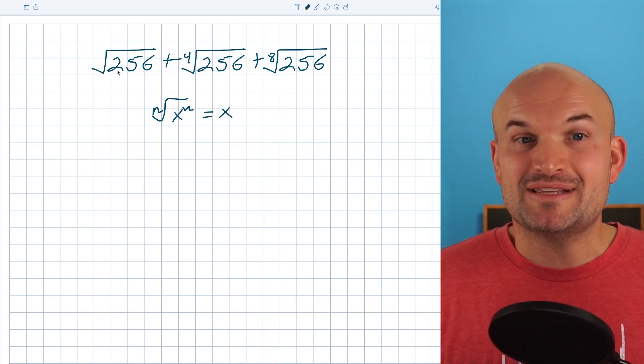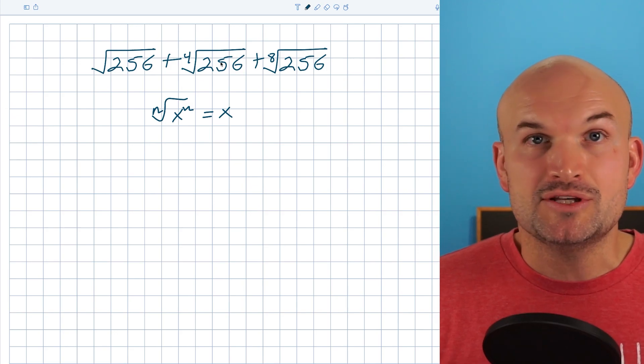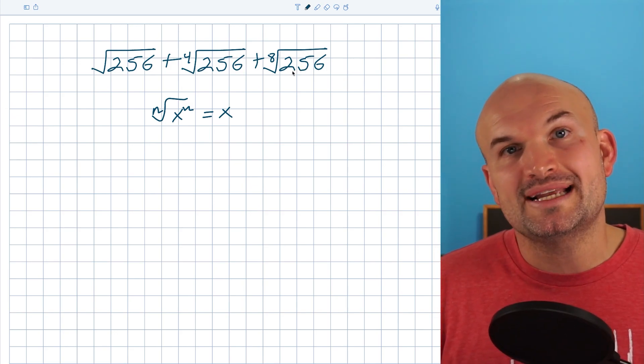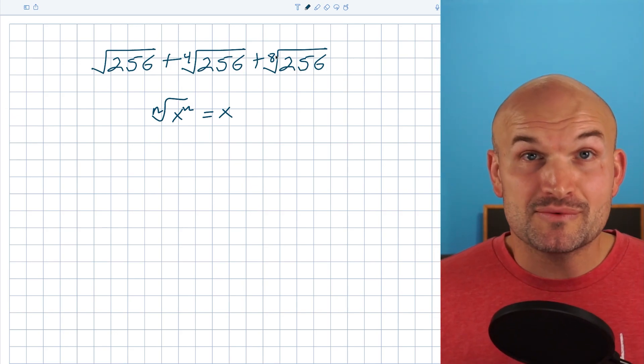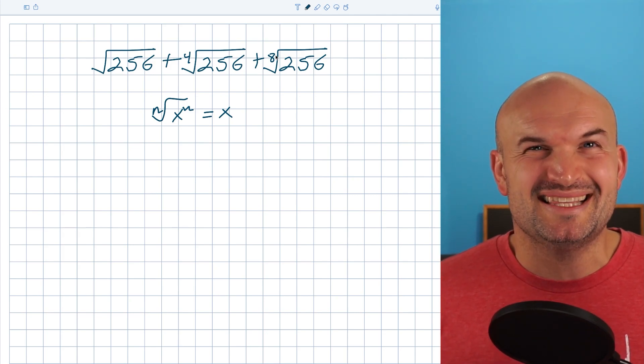So in this example, I want to get something squared. In this example, I want to get something to the fourth power. And in this example, I want to get something raised to the eighth power. And if we're going to simplify them, they all have to be the same number.